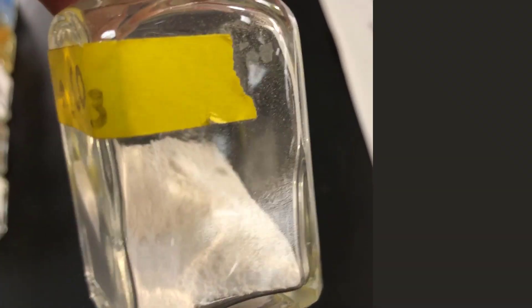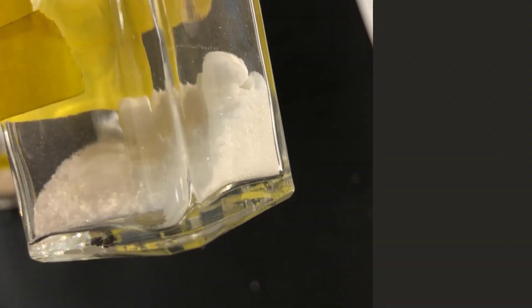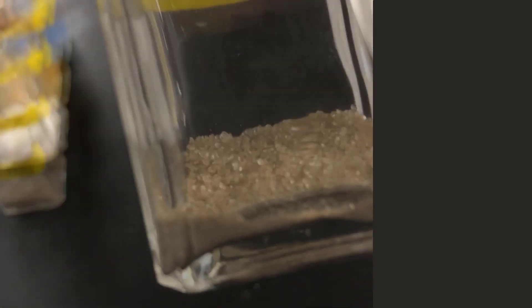So we're working with solutions here and the solutions are made from solid compounds dissolved in water. So what do these compounds look like before they're dissolved in water? So this is Na2CO3, this is Pb(NO3)2, this is AgNO3.